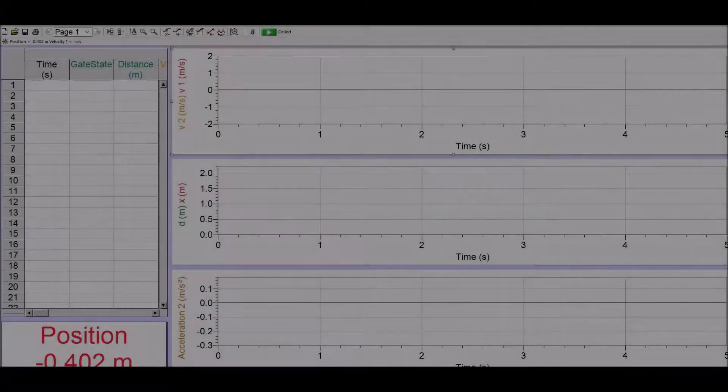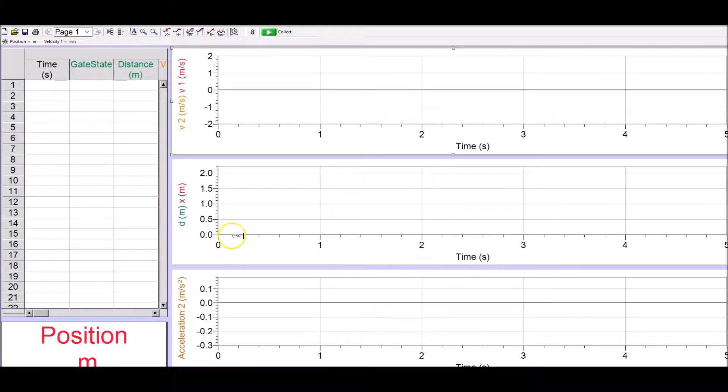Then on the logger probe, you can see the position is not quite zero. So what you're going to do is press control zero with the motion encoder cart bumped up against the receiver. And when you do that, it takes a second or two, but it will say zero meters per second. You start collecting the data,